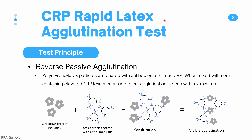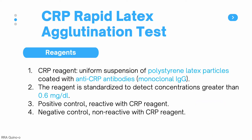The CRP rapid latex agglutination test is usually done on a glass slide. The CRP reagent is a uniform suspension of polystyrene latex particles coated with anti-CRP antibodies; most modern tests use monoclonal IgG. The reagent is usually standardized to detect concentrations greater than 0.6 mg per deciliter, though this varies by manufacturer — always check the product insert. All reagents include a positive control, which is reactive with CRP (usually pooled patient serum), and a negative control, which is non-reactive.